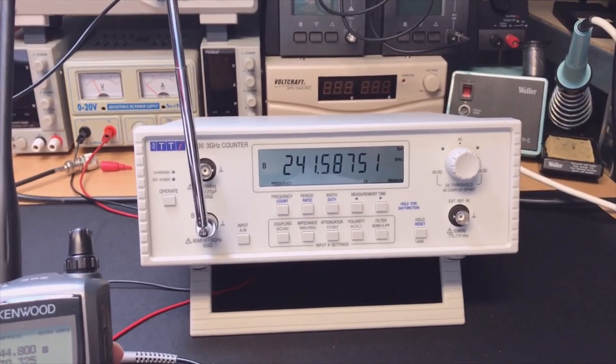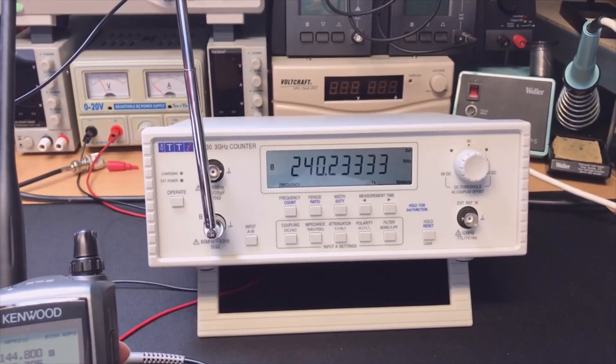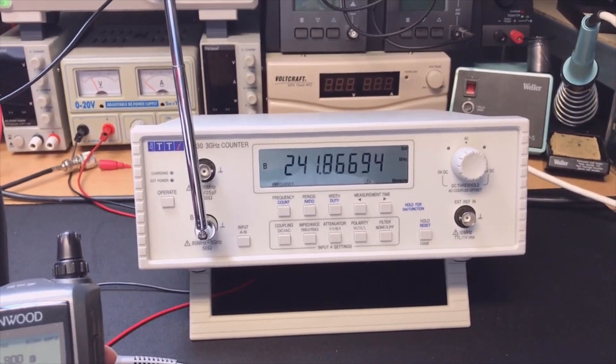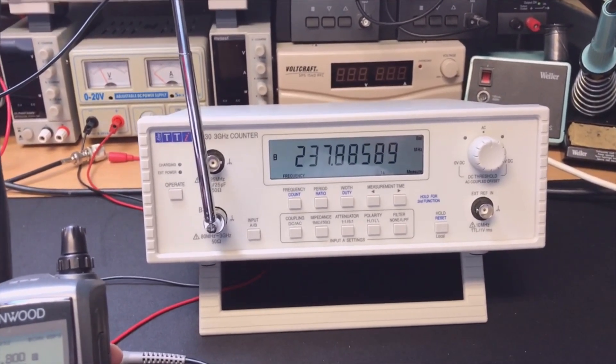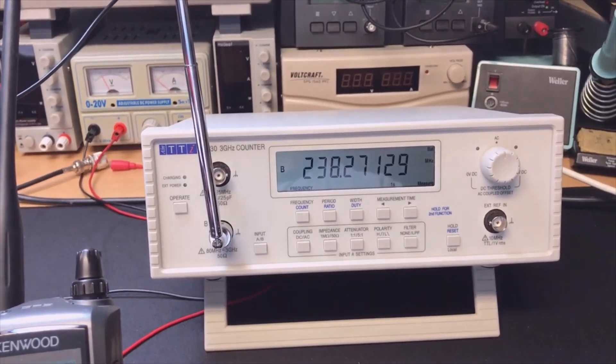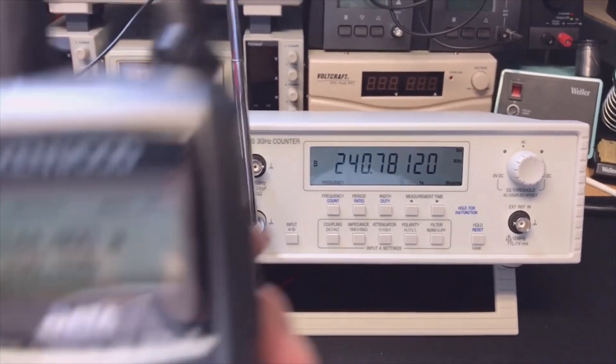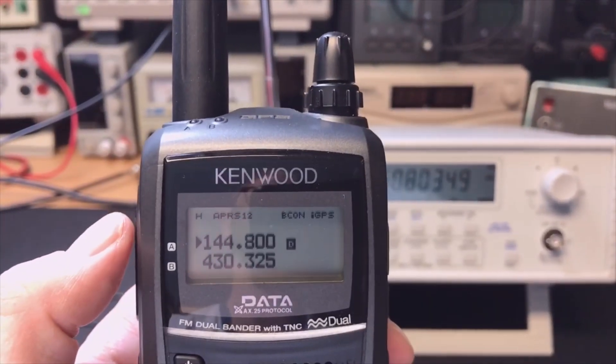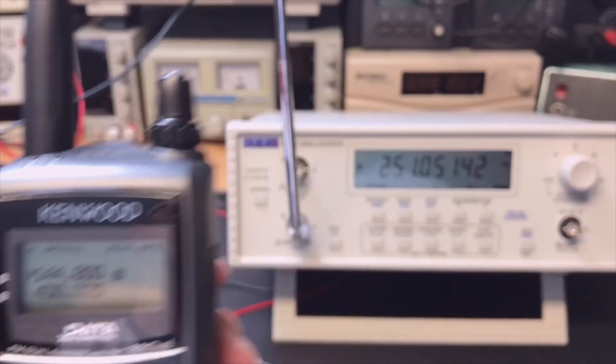Okay, let's see the B channel at the higher frequencies. Well, it is pretty sensitive. I see the attenuator is only on the A channel, not on the B channel, so we have to do with this. I have here a little portable radio. We will transmit on 144.800 megahertz.